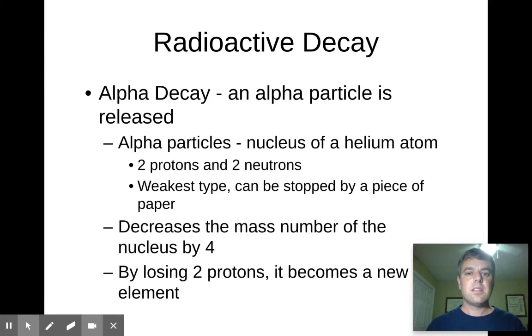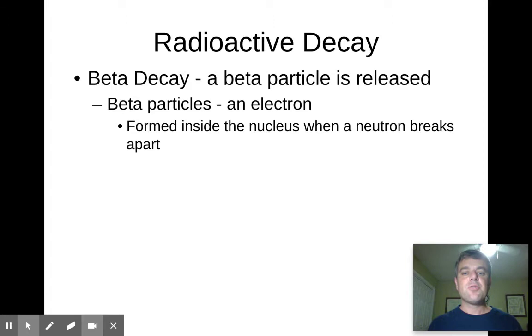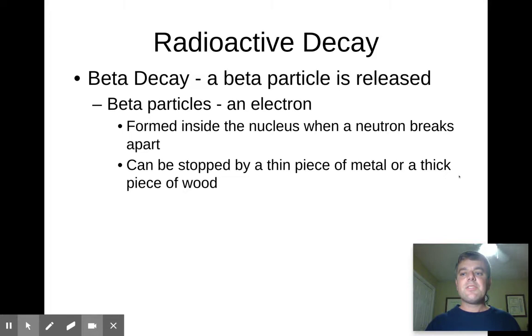Next, we have beta decay, where you release a beta particle. And a beta particle is an electron, which is formed when a neutron breaks apart. So essentially, a neutron can disintegrate, turning into both a proton which stays behind in the nucleus, and an electron which gets ejected from the nucleus. So if you want to visualize this, you can visualize a neutron as essentially being a proton plus an electron smushed together, and it can break apart, leaving behind a proton, and then the electron that's ejected is the beta particle. And when this happens, this electron has more energy than an alpha particle, so you can stop it with either a thin piece of metal or a thick piece of wood. So aluminum foil is typically thick enough to stop beta particles.